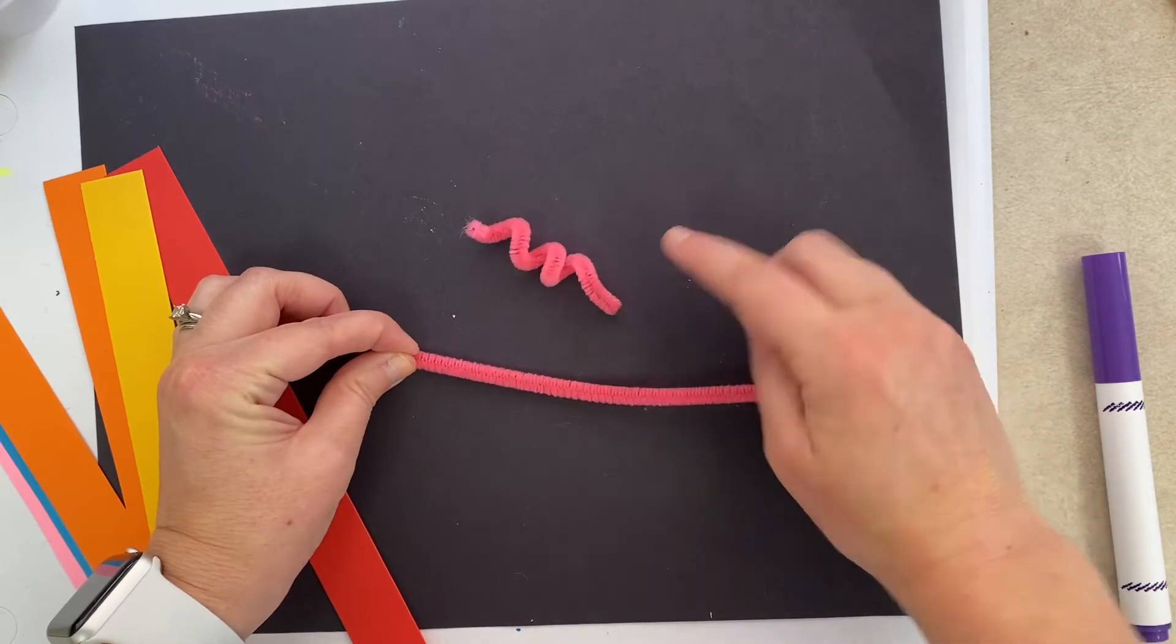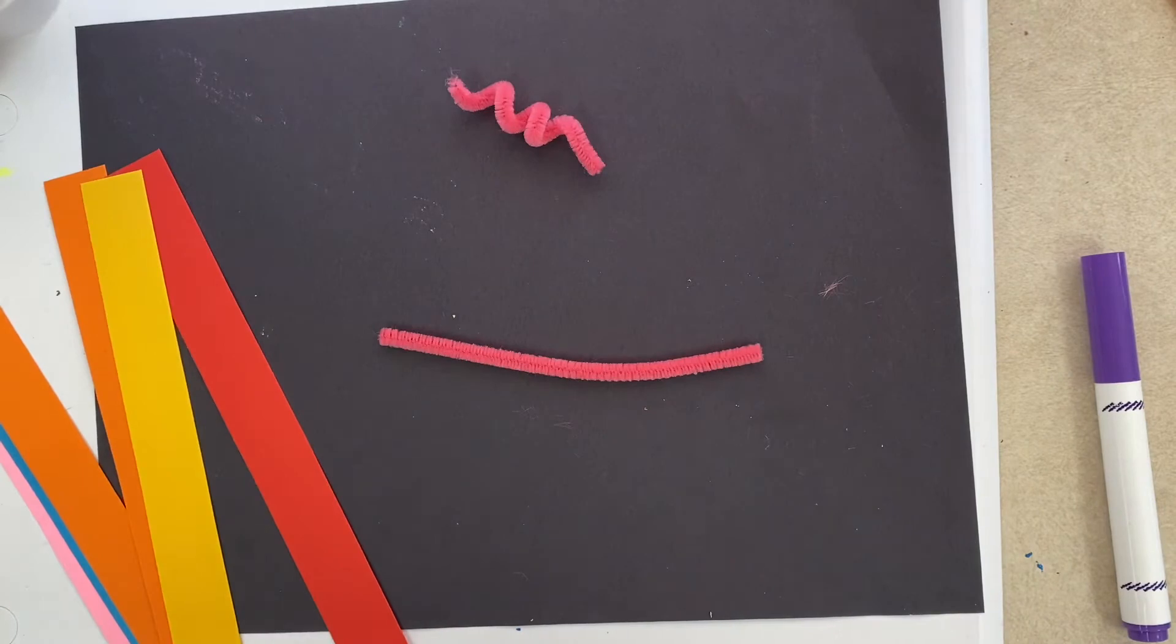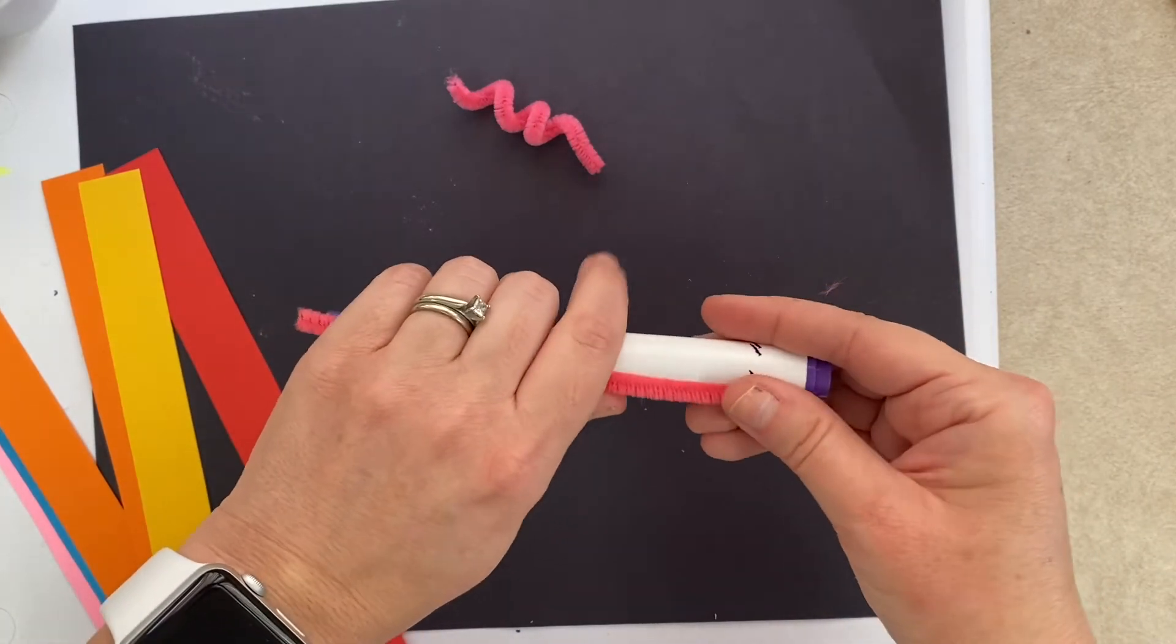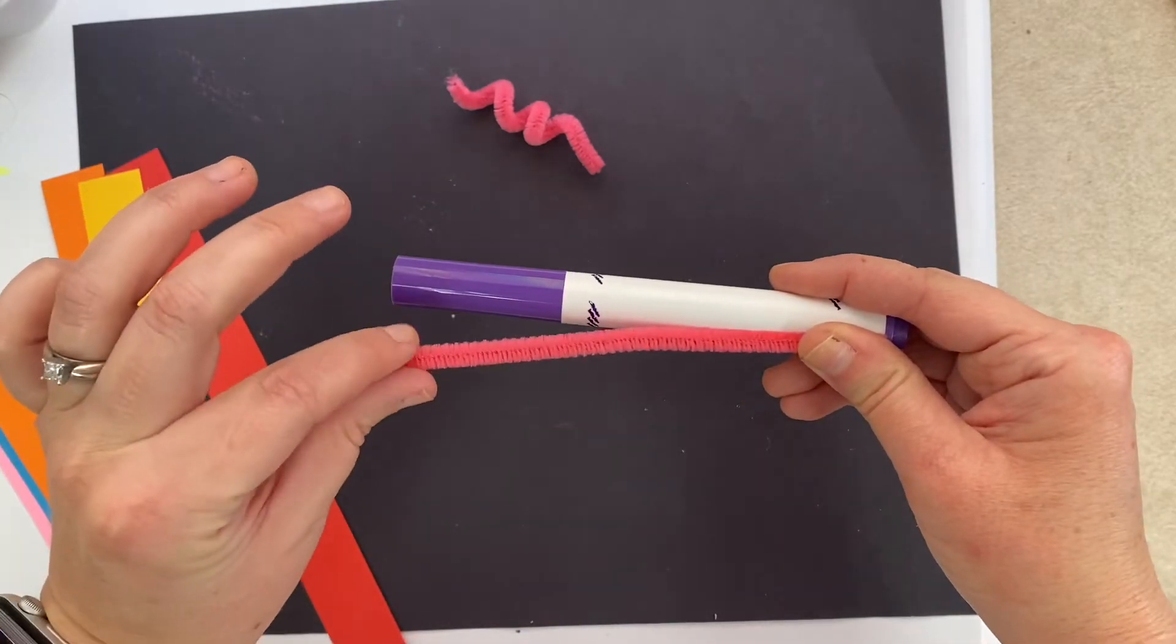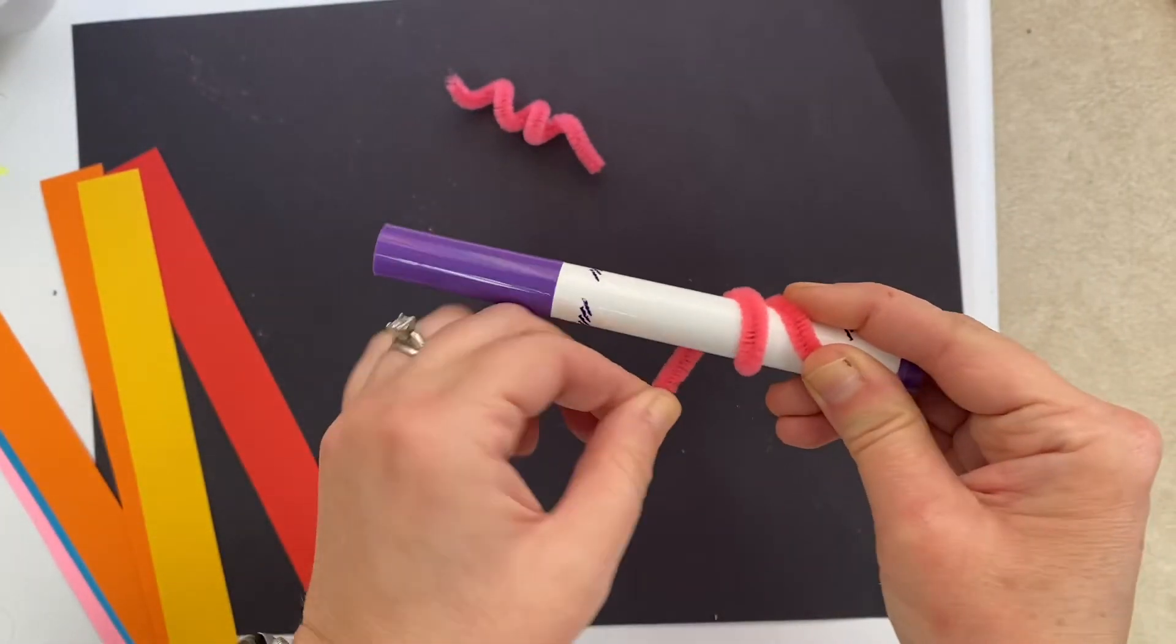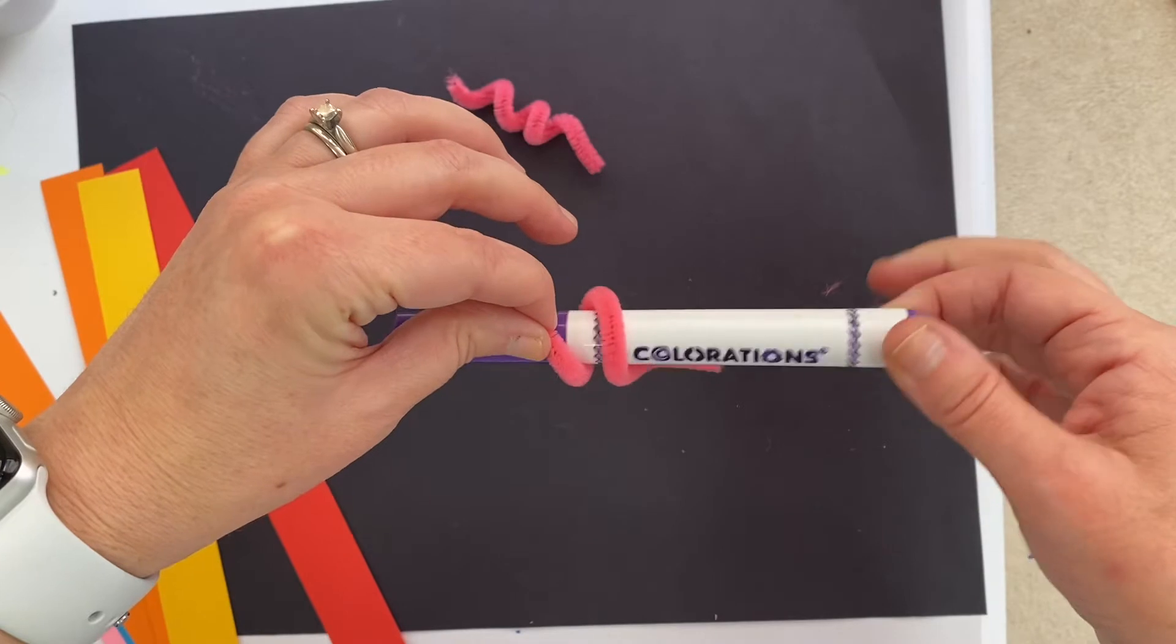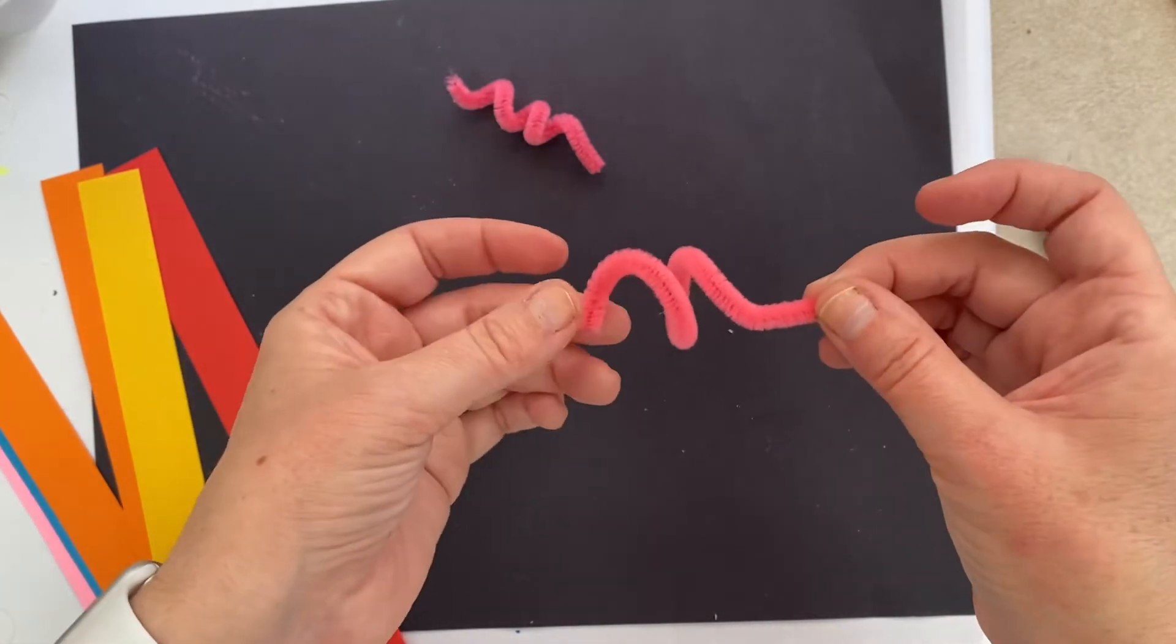Then you can try this with the marker with your other one and it's going to look a little different. You're going to hold your pipe cleaner and your marker together just like we did before. Grab the extra end of your pipe cleaner with your free hand, wrap, wrap, wrap. You don't have to wrap it as much because the marker is wider. Let it go—it keeps its shape. When you're ready, wiggle, wiggle, wiggle and pull your marker out. Wow, look how cool! Now I have a different kind of spiral line. Awesome.